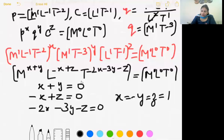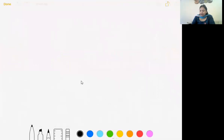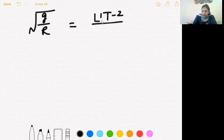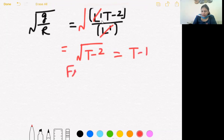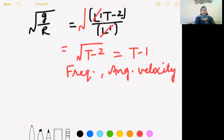Fourth question is named quantity having dimensions under root g by r. Obviously under root g, g is acceleration due to gravity and r is earth ka radius. Under root hai yahan pe so we have square root of T minus 2 that is T minus 1. So it might be frequency or angular velocity. I hope that is clear now students.